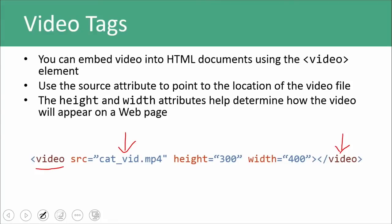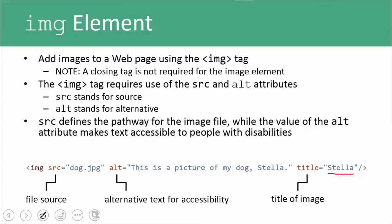One thing I forgot to mention with the image tag is that the image tag doesn't have a closing tag. Let's go back to that real fast because it's super important. See here — we have a forward slash that just ends the tag; there is no closing tag. There are a couple of other elements like that, but not very many. Sorry about that, but I wouldn't be able to live with myself if I didn't mention it.